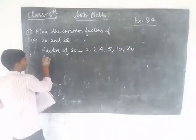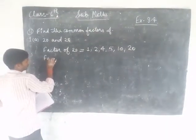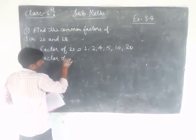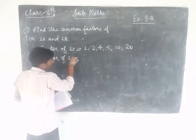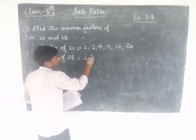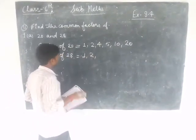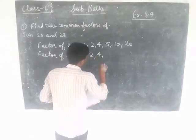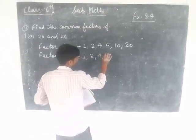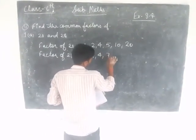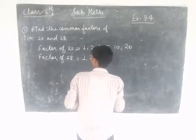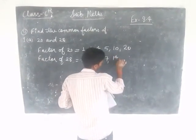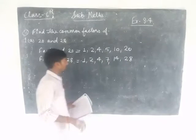Next we find the factors of 28. The factors of 28 are 1, 2, 4, 7, 14, and 28.